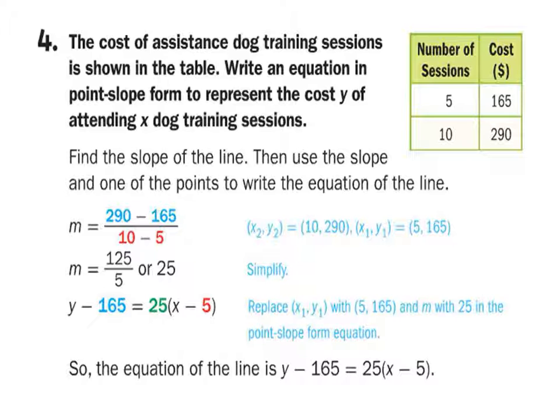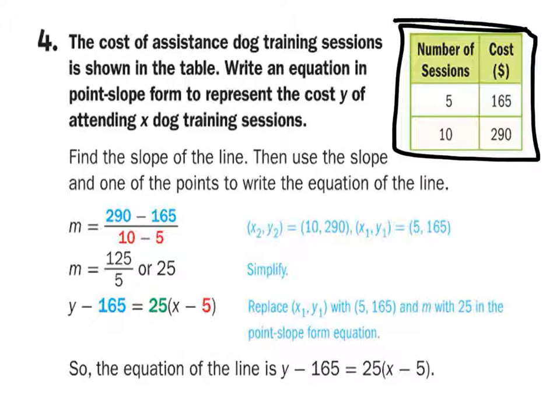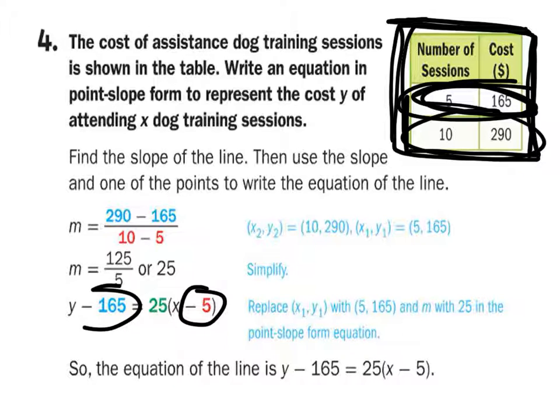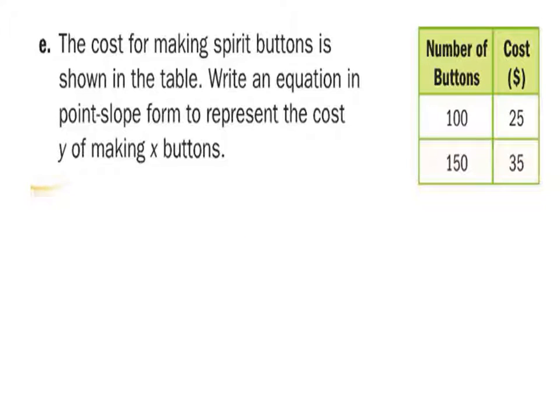Notice on this one, it's giving you a table that you've got to find. You've got to be able to find the slope from the table. After you find the slope from the table, you just choose one of these two. This one or this one. And it looks like the book chose this top one here. As you can see, you've got the 165 and the 5. Try E.